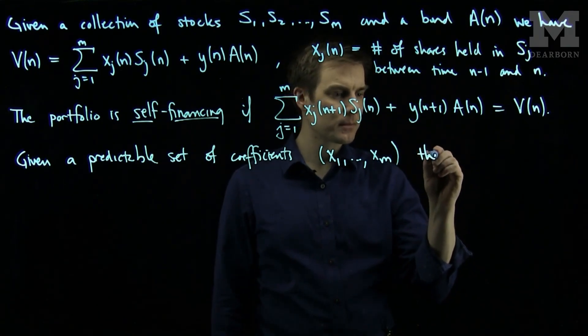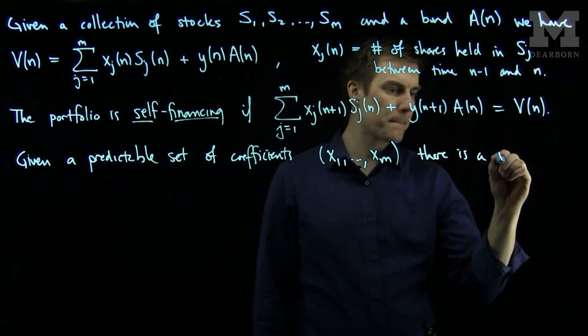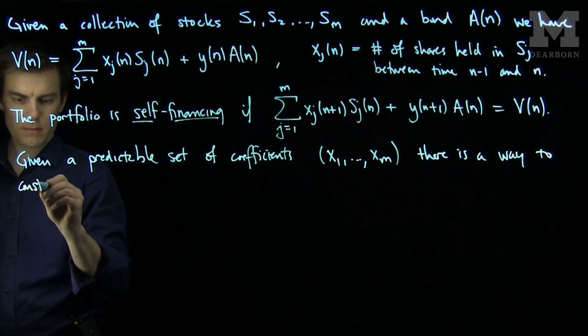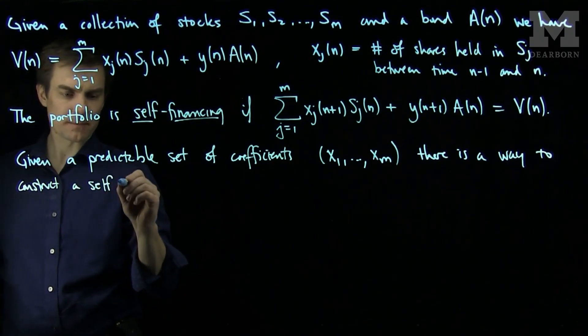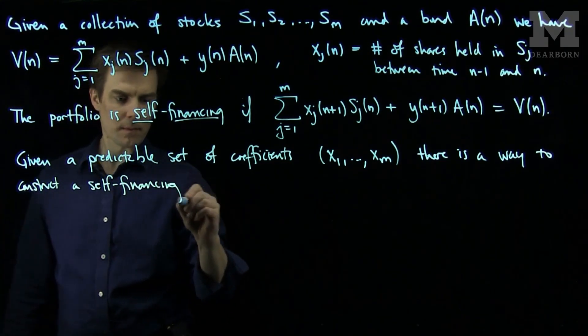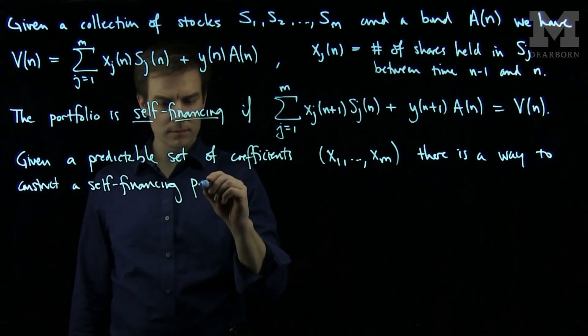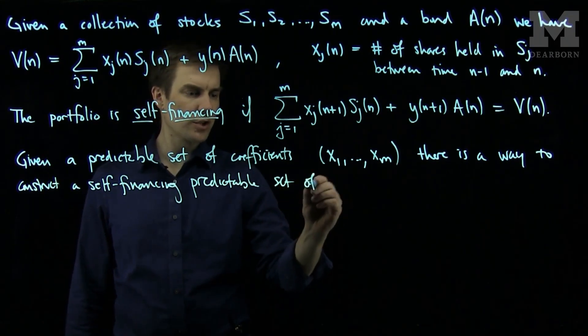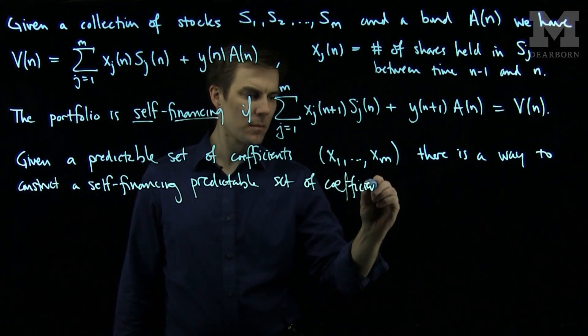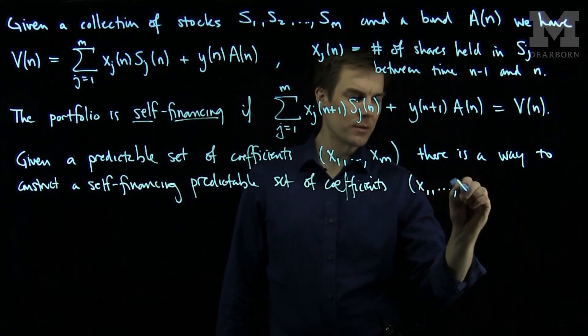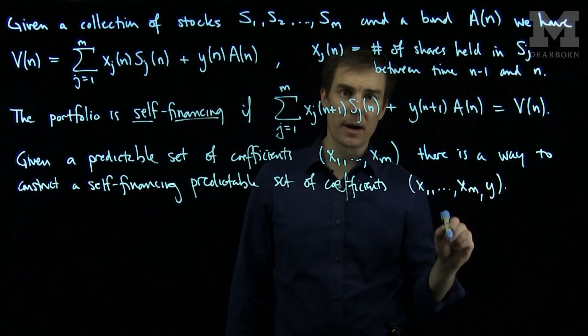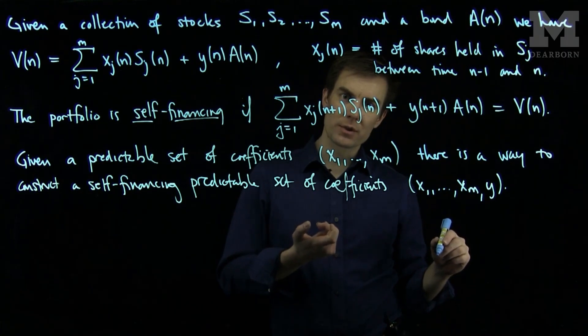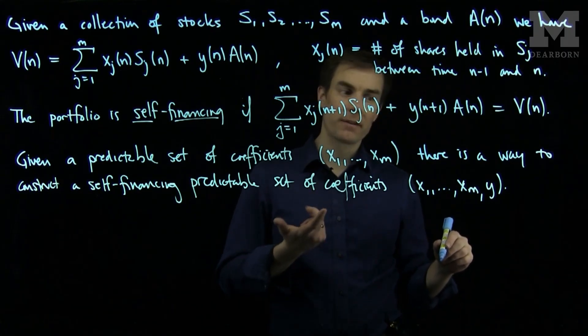there is a way to construct a self-financing predictable set of coefficients with the addition of a bond. A bond can be used to take a predictable collection of coefficients for stock prices and make that collection a self-financing strategy.